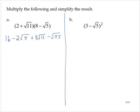Exercise B, we have 3 minus the square root of 5 squared. So what I'll do is I'll rewrite that as 3 minus the square root of 5 times 3 minus the square root of 5, and FOIL from there.